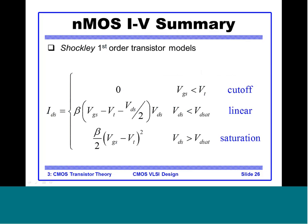Combining all three regions gives the ideal MOS transistor model, known as the Shockley first-order transistor model. To recap: if VGS < VT, NMOS does not conduct and is in cutoff (IDS = 0). In the linear region where VDS < VDSat, IDS = β · (VGS − VT − VDS/2) · VDS. When VDS > VDSat, the transistor enters saturation and IDS = (β/2) · (VGS − VT)², independent of VDS.